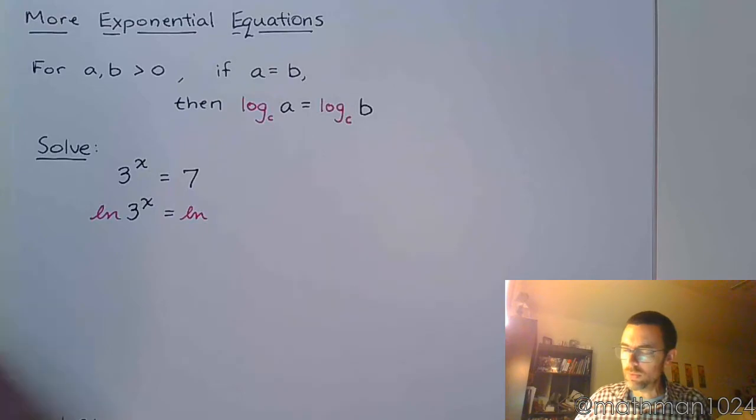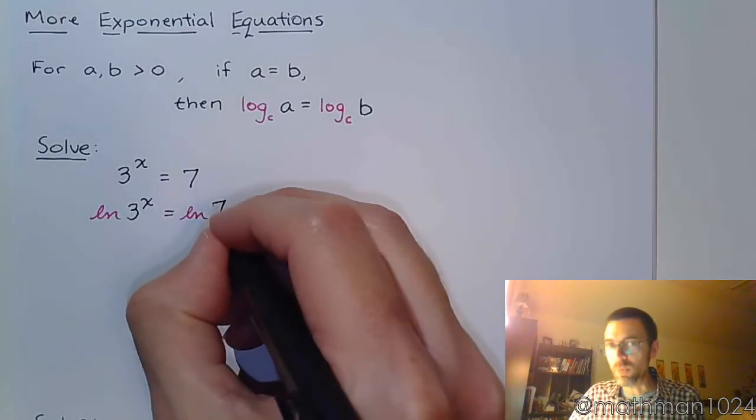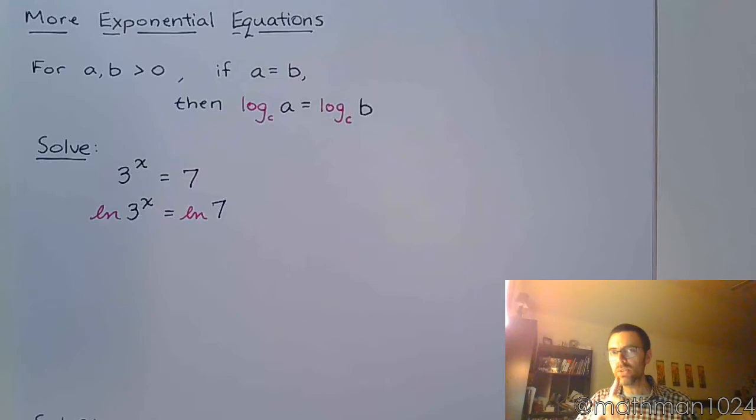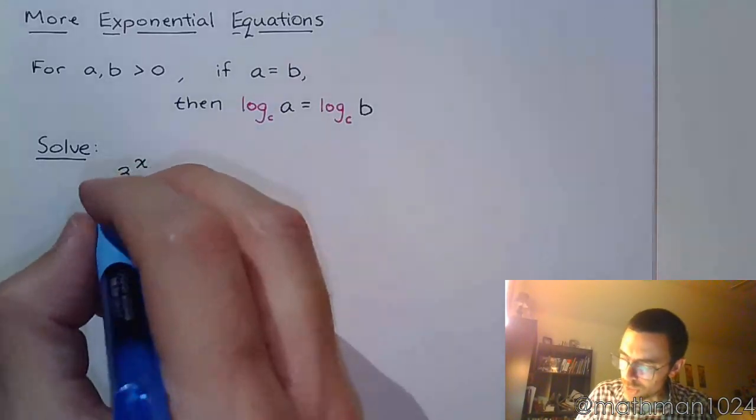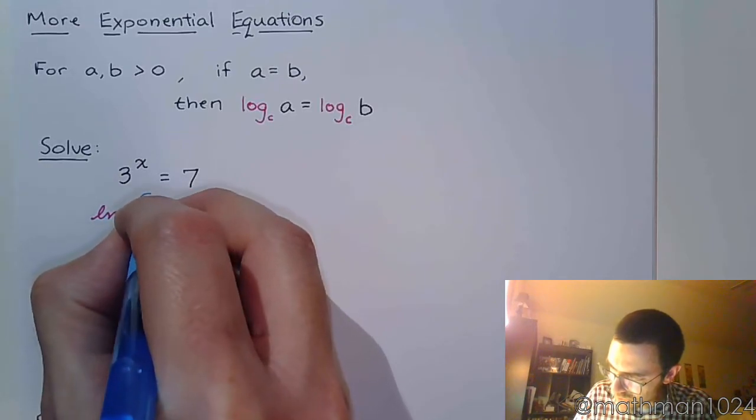And you might be wondering, why are we doing this? This is making things more complicated. Well, there is one property of logarithms that really helps us out, and that's a property that says if you have a power inside a logarithm, you can write that out in front as a factor.